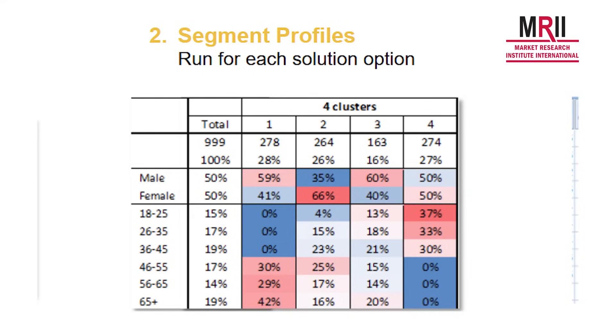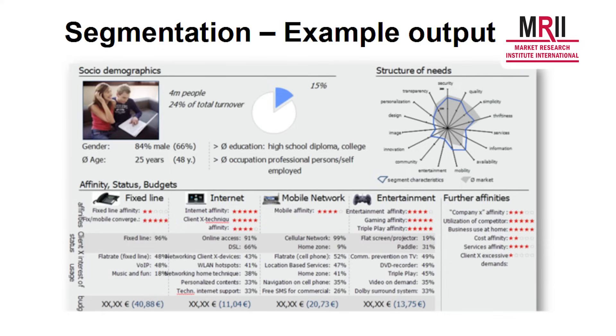Part of the iterative process of developing a segmentation is going through and deciding how many segments we need, what those segments look like, and fine-tuning them. Once we've made those decisions, we'll generate segment profiles to help the client understand what the different segments look like.